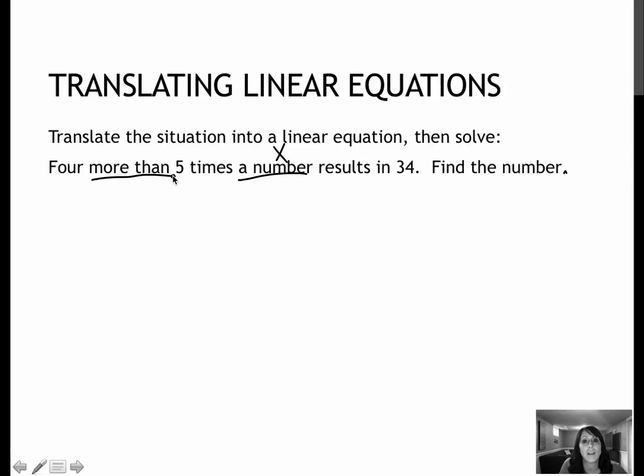Now I have to look for those key terms that we've learned before. More than means addition. Four is going to be a plus. Five times a number would be five times the number x. Results in would be that equal to, and then 34 would be 34. So this would be the equation that I would use. You might also have written the plus four at the end, which would be a little bit more correct, but honestly either one is correct.